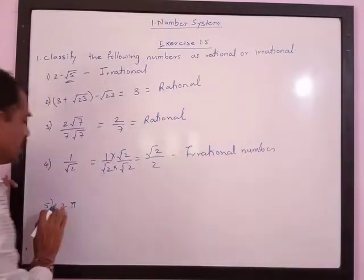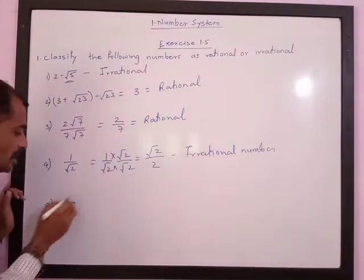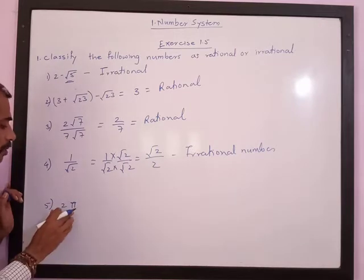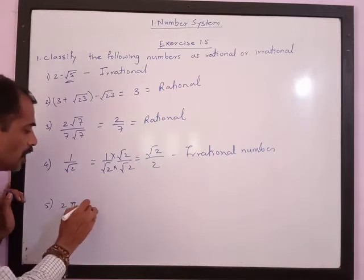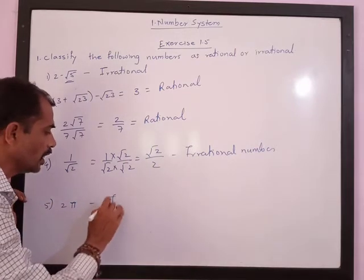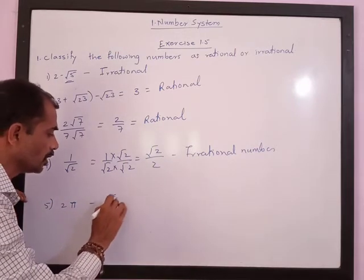Next is 2 times pi. Since pi is an irrational number, 2 times pi is also an irrational number.